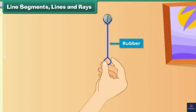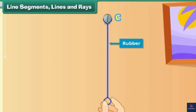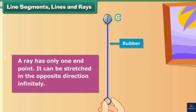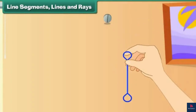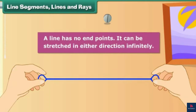Look at this thin strip of rubber. Let us nail it to the wall and name the point C. The other end of the rubber is free. Let us stretch it — first a little, then a little more, and then some more. What we get is a ray. A ray has only one end point and it can be stretched in the opposite direction infinitely. Let us now remove the nail and stretch the rubber in the other direction. We now have a line. A line has no end points and it can be stretched in either direction infinitely.